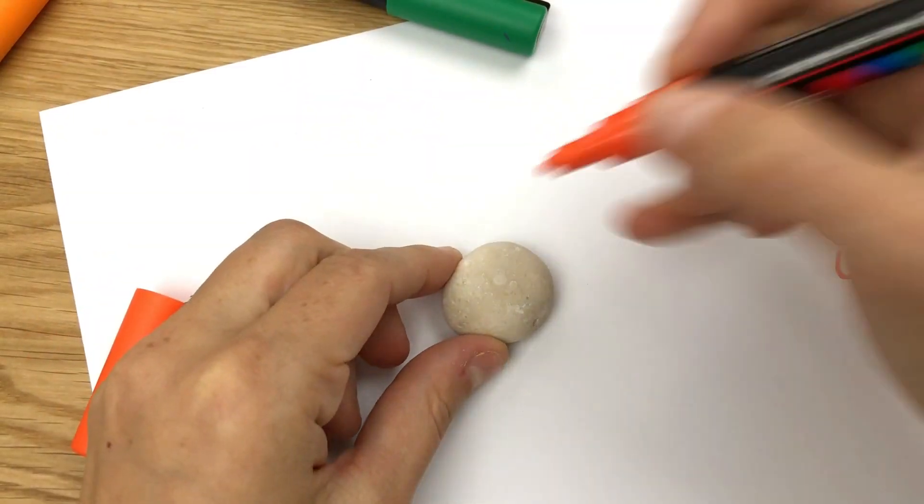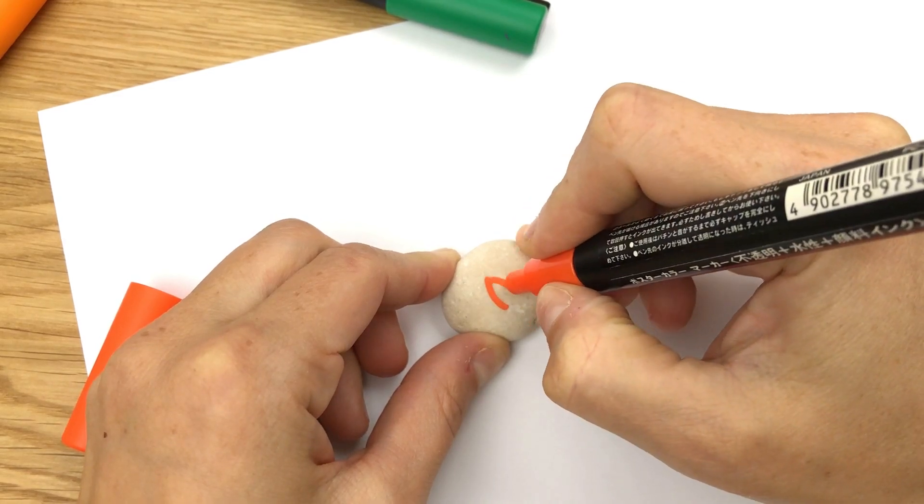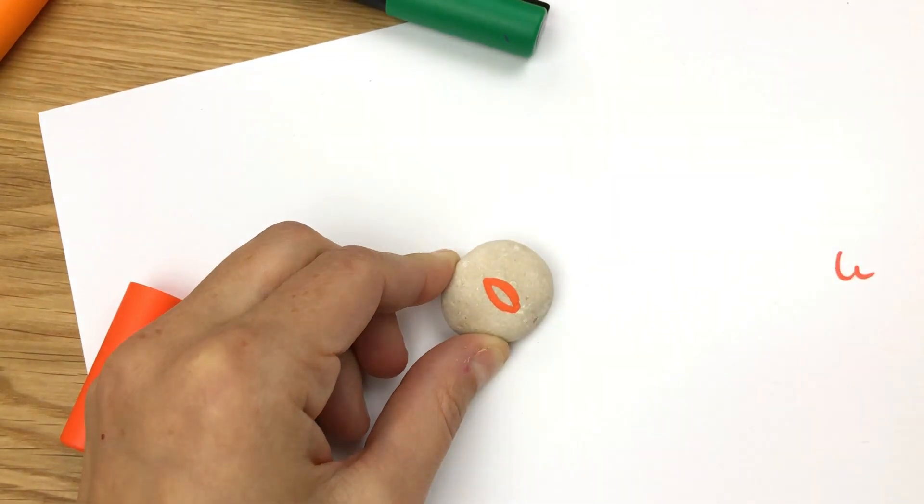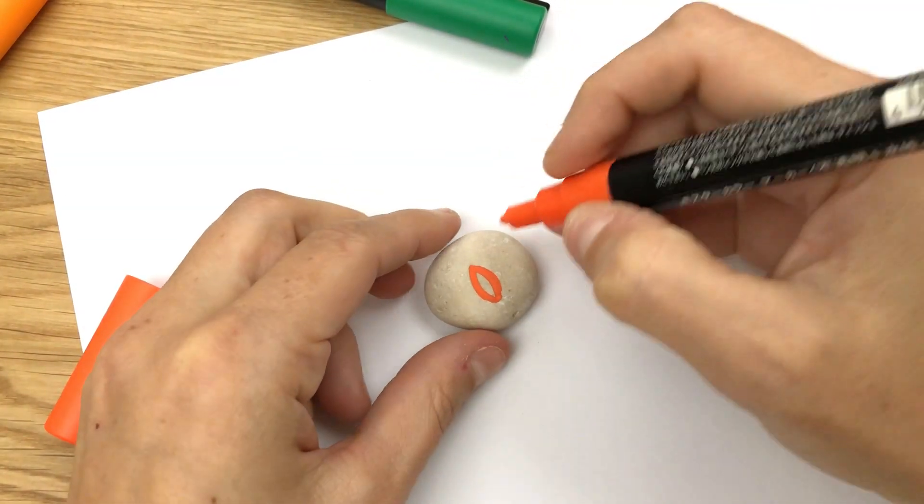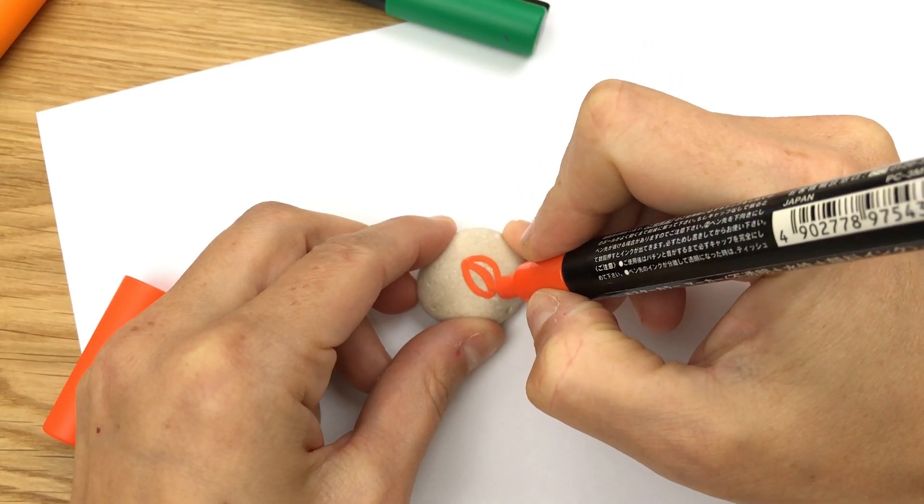So we're just gonna start by creating our center of our pumpkin, which is almost like an eye shape on its side, just like that. And then next, you're gonna do the next strip, comes out to the side like so.